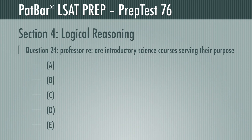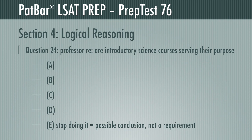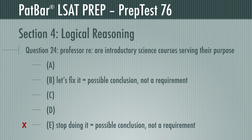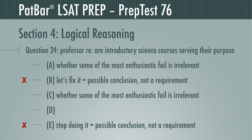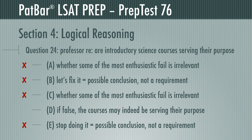You are to find the one assumption required for the argument to work. E—to say we should stop doing something if it doesn't work—is merely a possible conclusion of the argument that it doesn't work, not a requirement. Same problem with B: to say 'let's fix it' is a possible conclusion and nothing more. Whether some of the most enthusiastic students fail these courses is completely irrelevant, so neither A nor C is correct. If we assume the opposite of D—that some of the least enthusiastic students are among those most committed to being science majors—it would suggest the courses are serving their purpose, collapsing the argument. D is required and is the correct response.